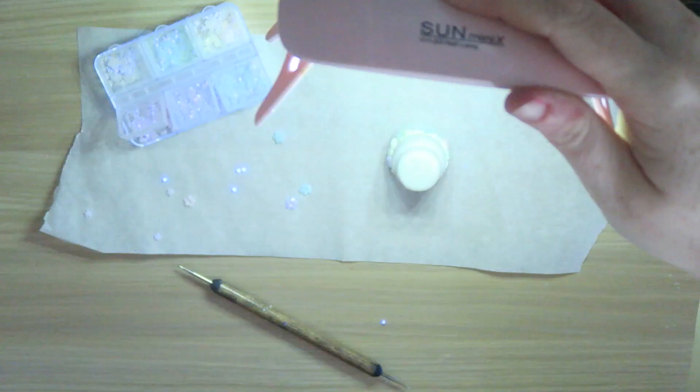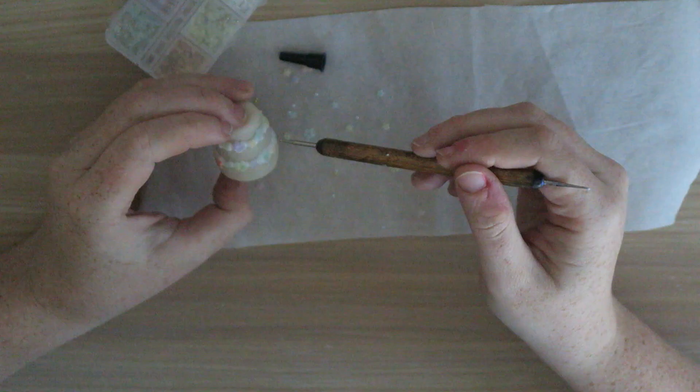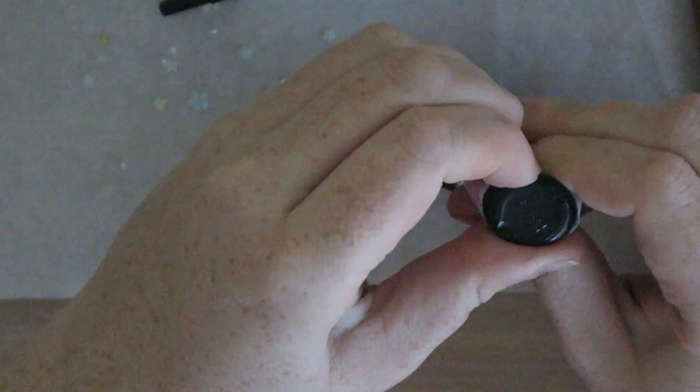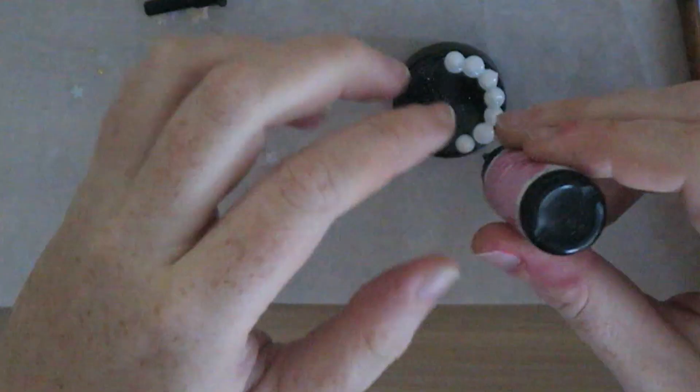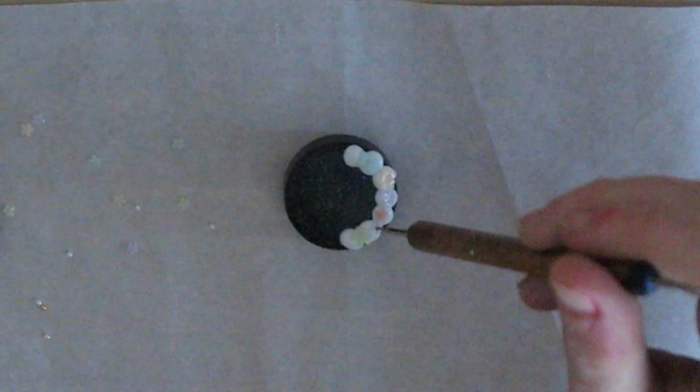So the 3D UV resin will cure like normal UV resin under a UV light. So here's another cake I decorated using some dollops of the 3D UV resin as well as the flowers.